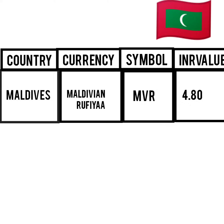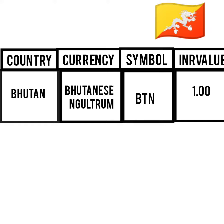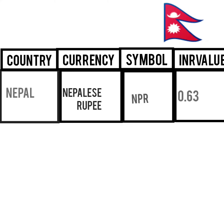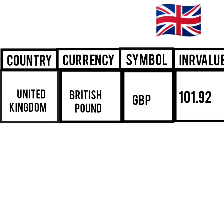Maldives, Maldivian Rufiyaa, MVR: 4.80. Bhutan, Bhutanese Ngultrum, BTN: 1.00. Nepal, Nepalese Rupee, NPR: 0.63.